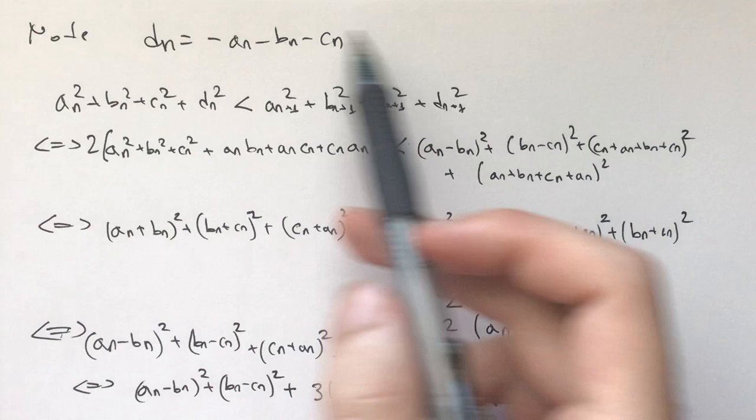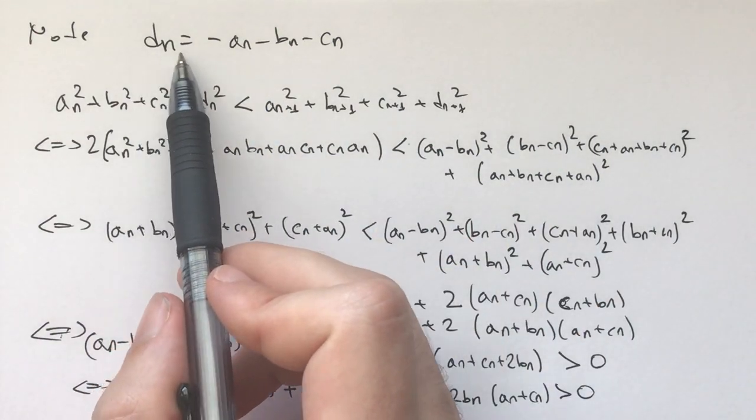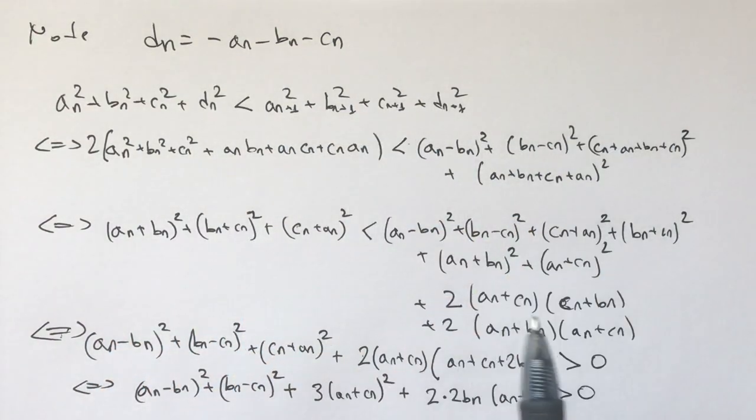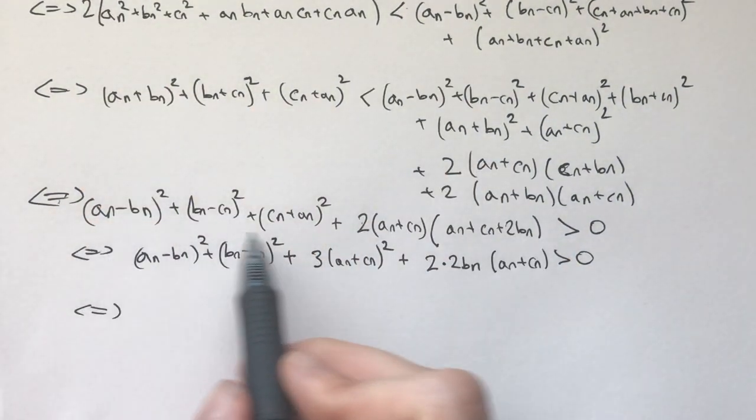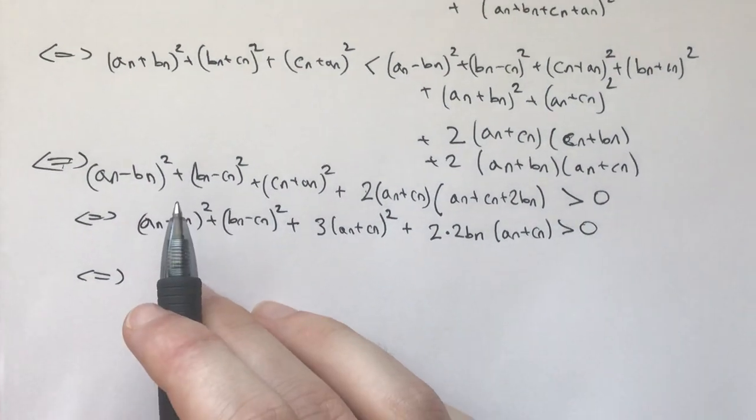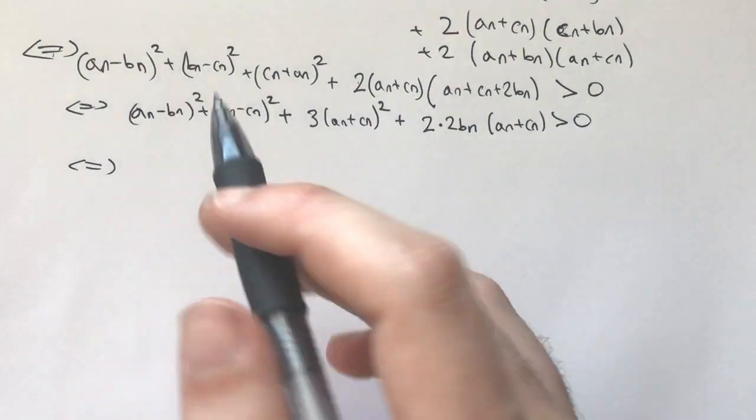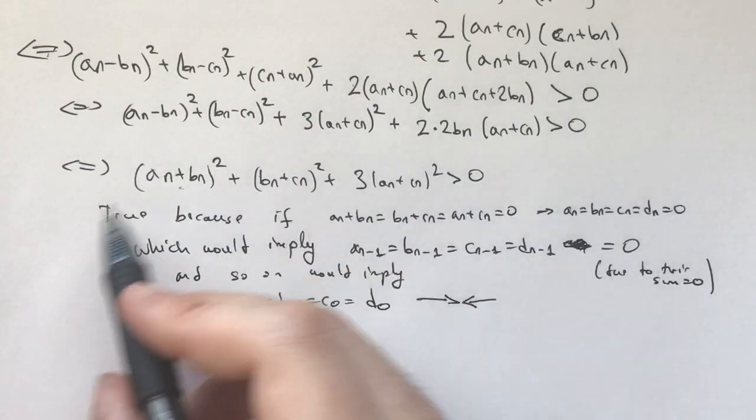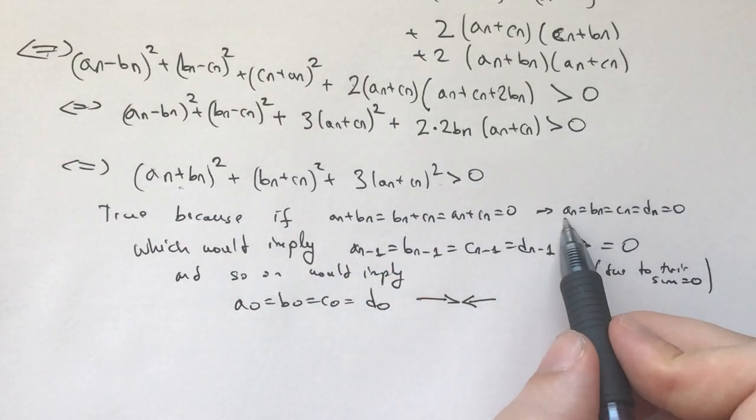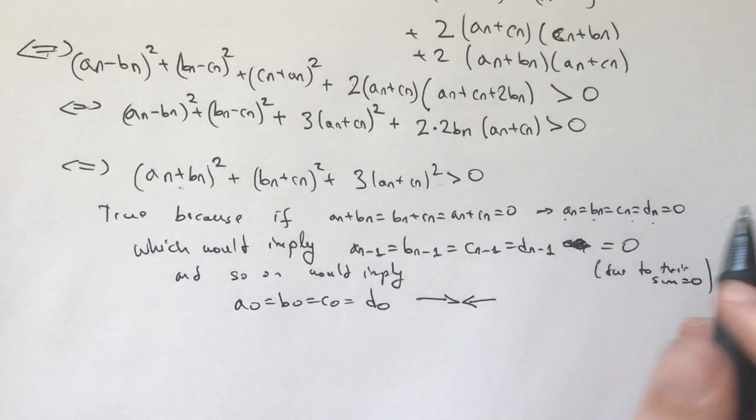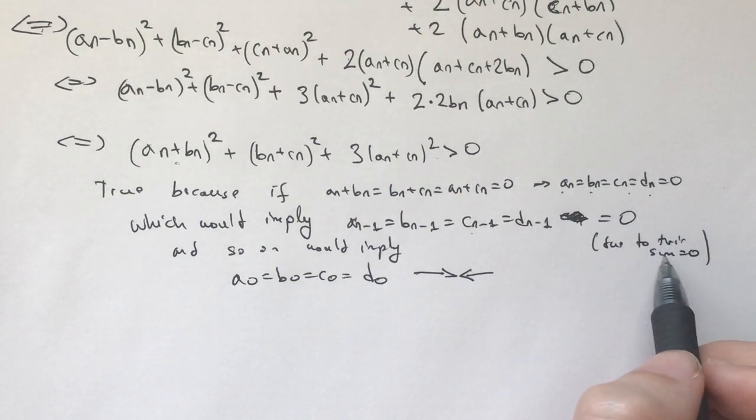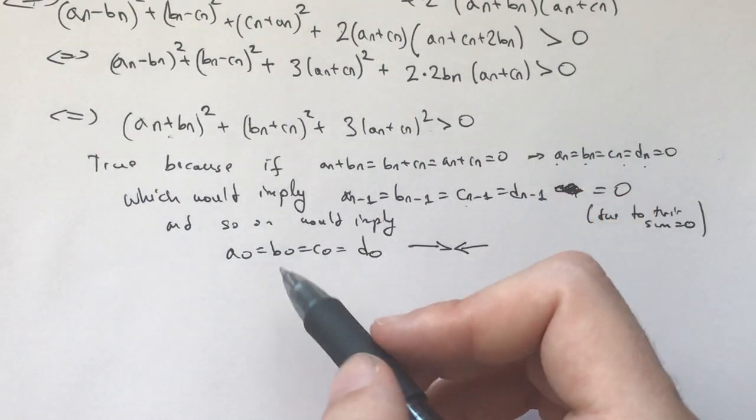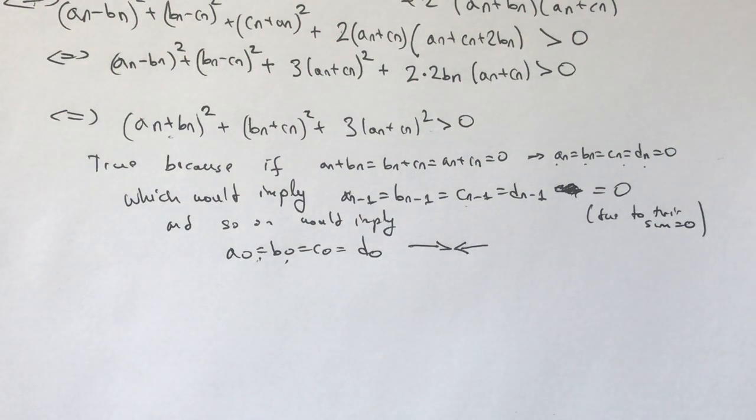Here's the proof. This is the algebraic manipulation. Dn is negative an, negative bn, negative cn. And then what you get from here, these are all if and only if statements, with the final thing being true, which implies this, which is true, because if all of these were 0, that would imply an and bn and cn and dn were all equal to 0, which would imply that the previous ones were equal, and then equal to 0 due to their sum being 0, which would finally imply going backwards a0 equals b0 equals c0 equals d0, which is a contradiction by the problem statement.